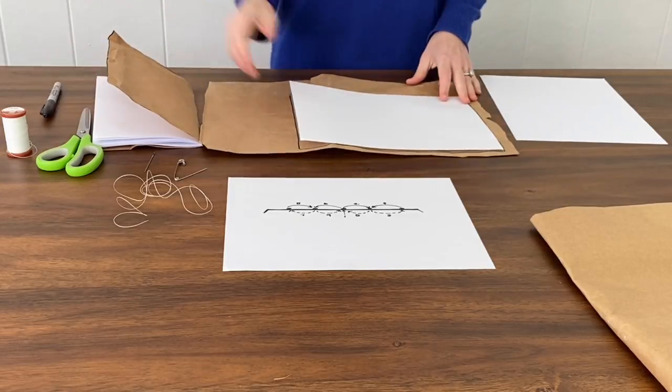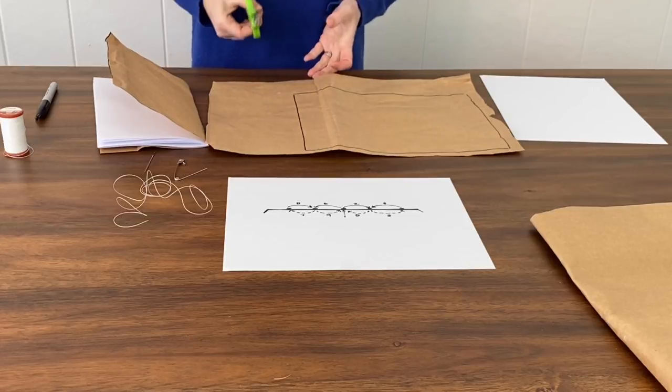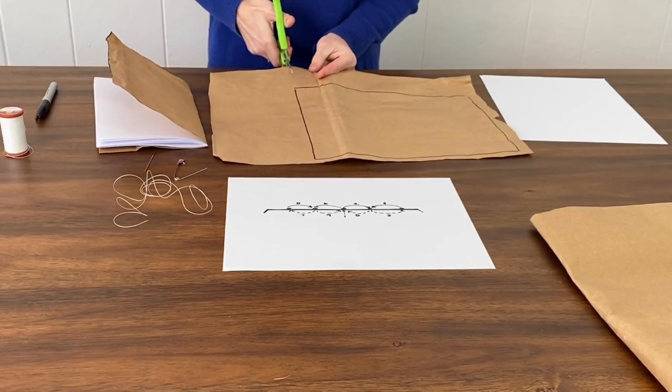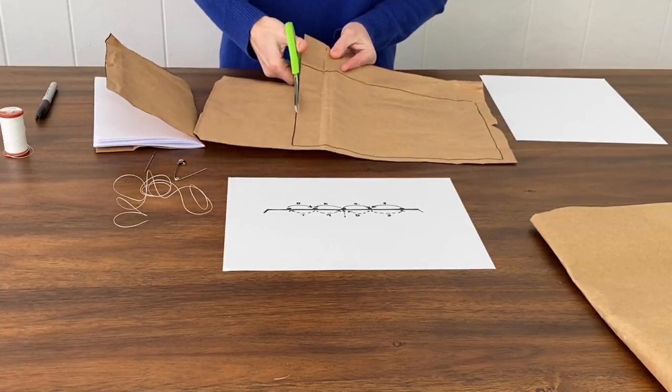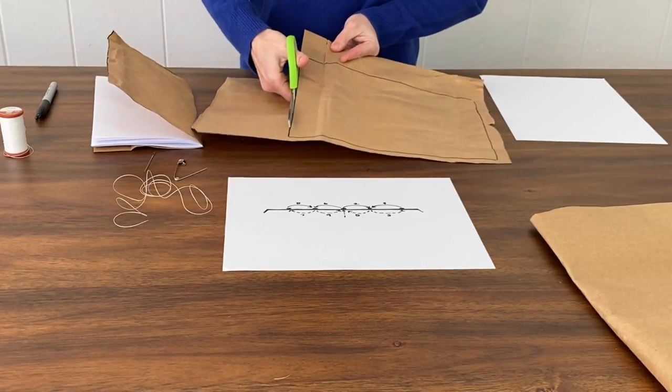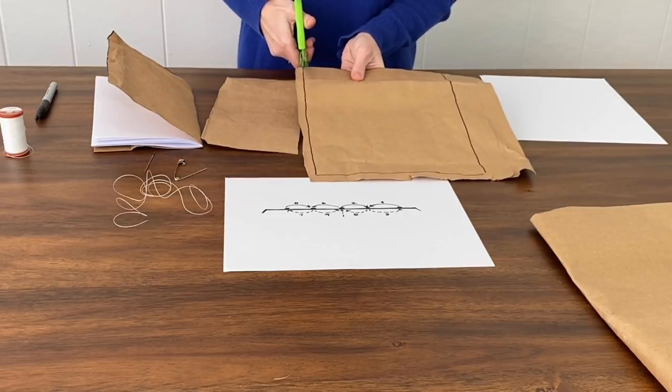Once you've traced all four sides, you can use a pair of scissors to carefully cut around the line that you've drawn. You may need an adult's help if your scissors are sharp. Be sure to cut carefully so that you don't cut your fingers.